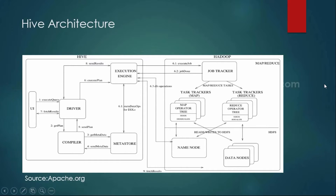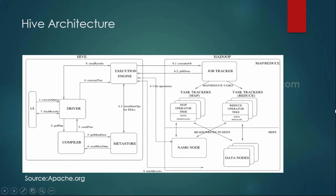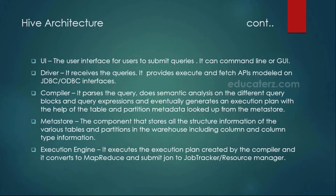To summarize the Hive architecture: the UI is where you write and execute queries using the Hive shell or GUI. The driver receives the query and passes it to the compiler for parsing. The compiler connects to the metastore for metadata information, generates an execution plan, and connects to the execution engine, which submits the job to the job tracker or resource manager. Results flow back to the execution engine, then the driver, and are displayed on the UI.